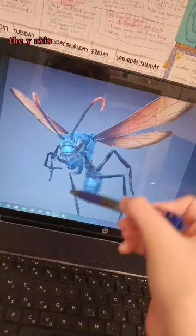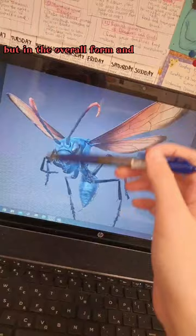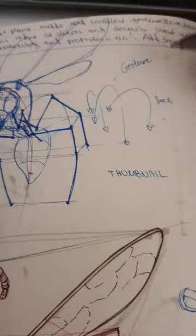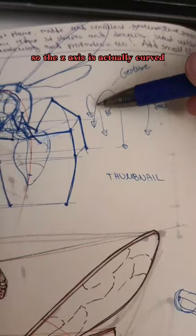In one form it's gonna be like this but in the overall form and gesture motion it is actually gonna be curved. So the z-axis is actually curved because this is the kind of gesture we are gonna see in this pose.